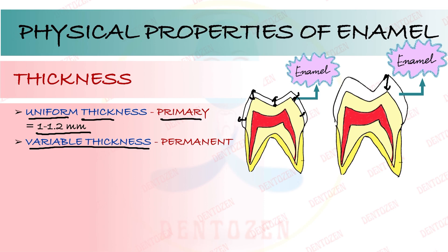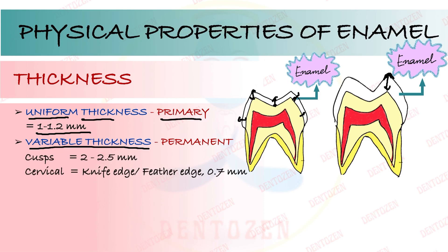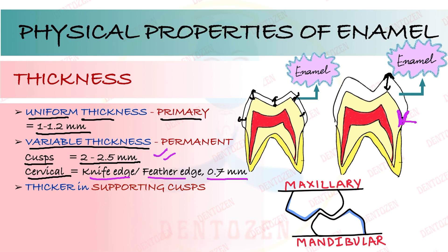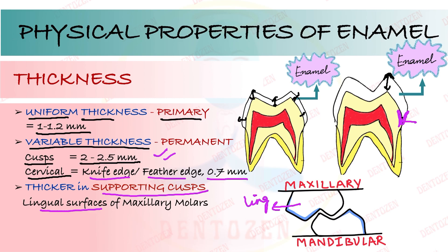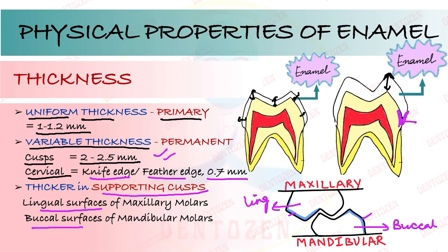In permanent teeth, enamel is thickest in the cuspal region — at the cusp tip. It is thickest in the cusps of molars and premolars at about 2 to 2.5 millimeters. In incisal teeth it is thickest at the incisal edges, and it is thinner in the cervical regions where it becomes a knife edge or feather edge at about 0.7 mm. Enamel is also thicker on the supporting cusps — on the lingual surfaces of maxillary molars and the buccal surfaces of mandibular molars — due to functional adaptation.